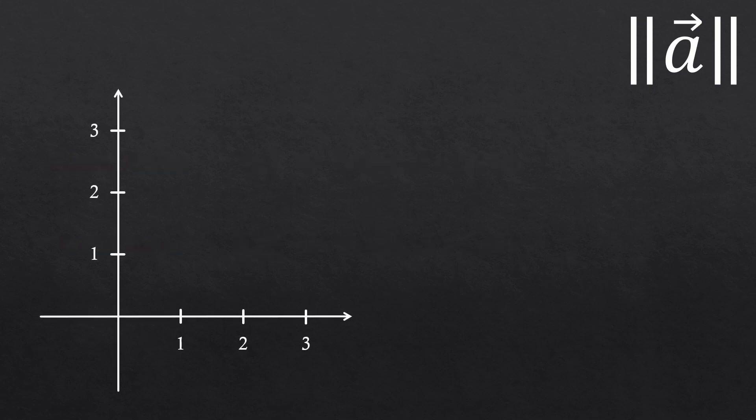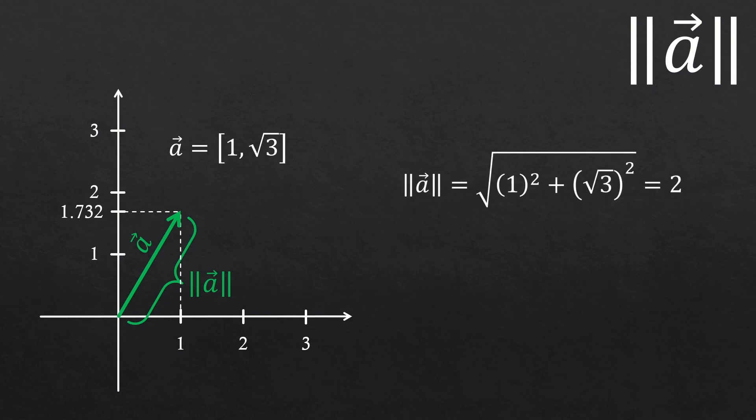So for example, we have this vector a. It's reaching 1, square root of 3, let's say. And what's the length of this vector? We just need to use the Pythagorean theorem. So the length is 2. Again, norm of a vector is the magnitude or length of the vector. That's it.